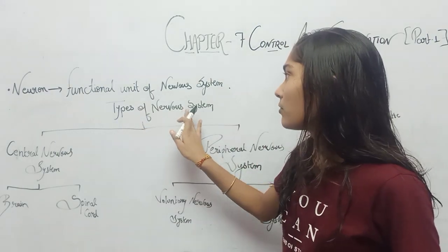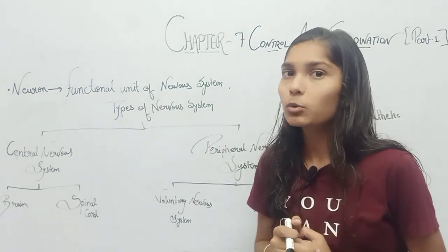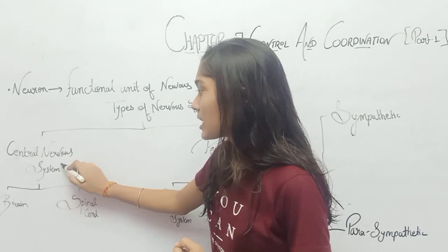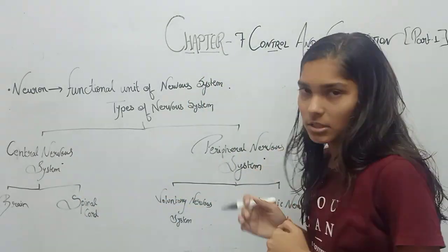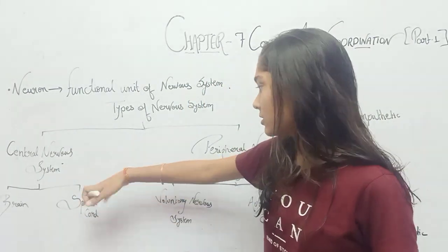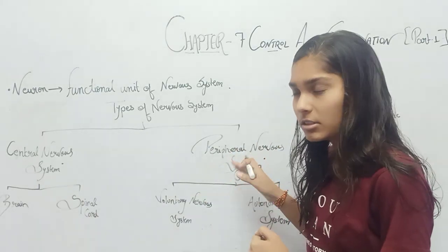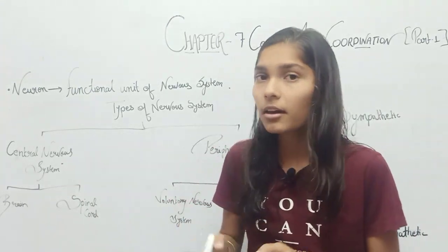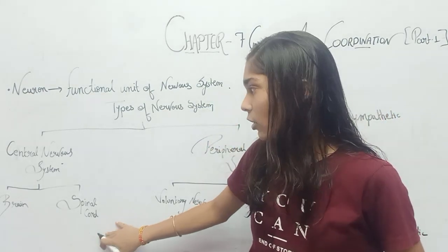Now, the types of nervous system. There are two types: Central Nervous System and Peripheral Nervous System. The Central Nervous System consists of the Brain and Spinal Cord.